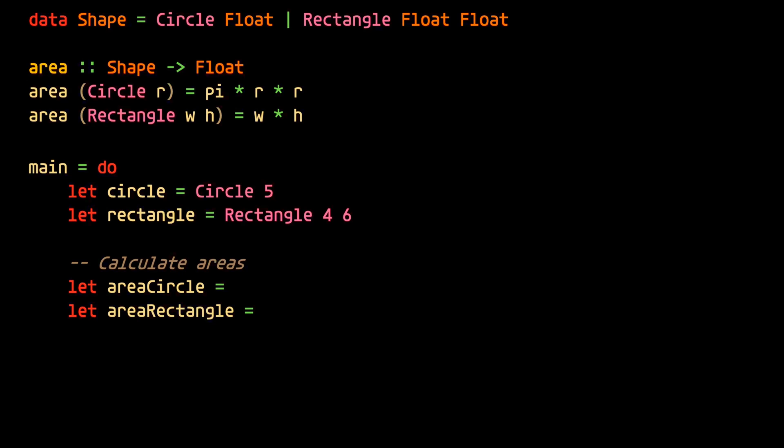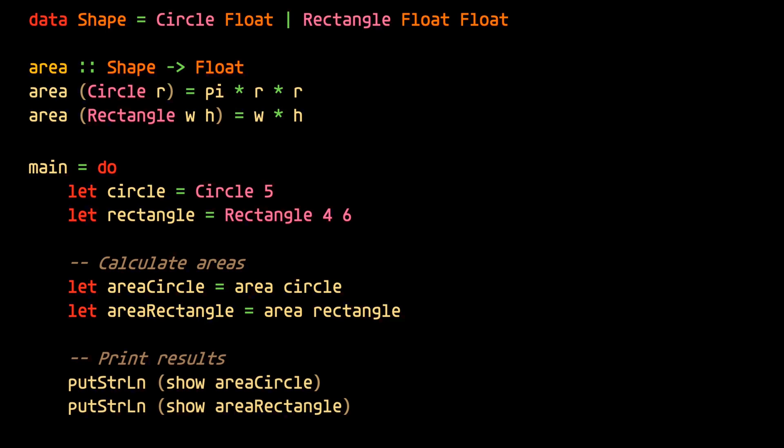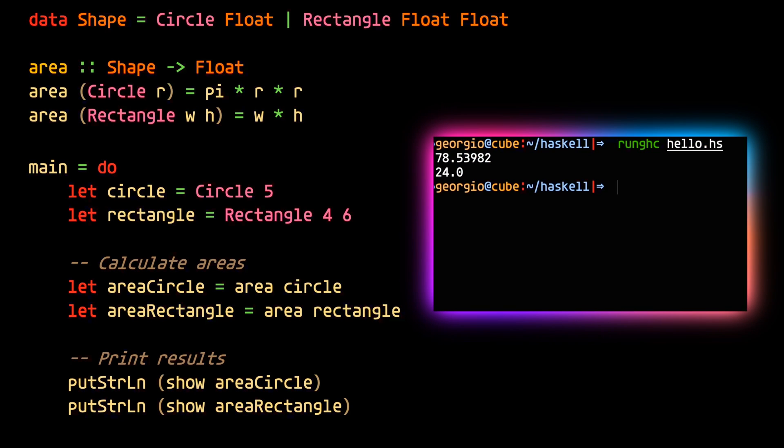So when the area function is called, the pattern will be matched, in this case the pattern being the shape constructor, and whichever pattern is matched is the function body that will execute.